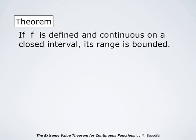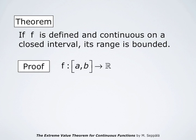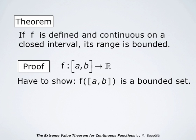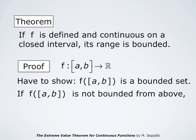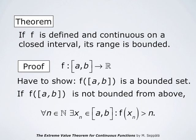We start with the observation that a function which is defined and continuous on a closed interval has a bounded range. To prove this, we consider a function defined on the closed interval from a to b, and we must show that the set of values of f is a bounded set. If this set is not bounded from above, then f takes arbitrarily large values on the interval, meaning that for any number n we can find a point x_n in the closed interval from a to b such that f at x_n is larger than n.